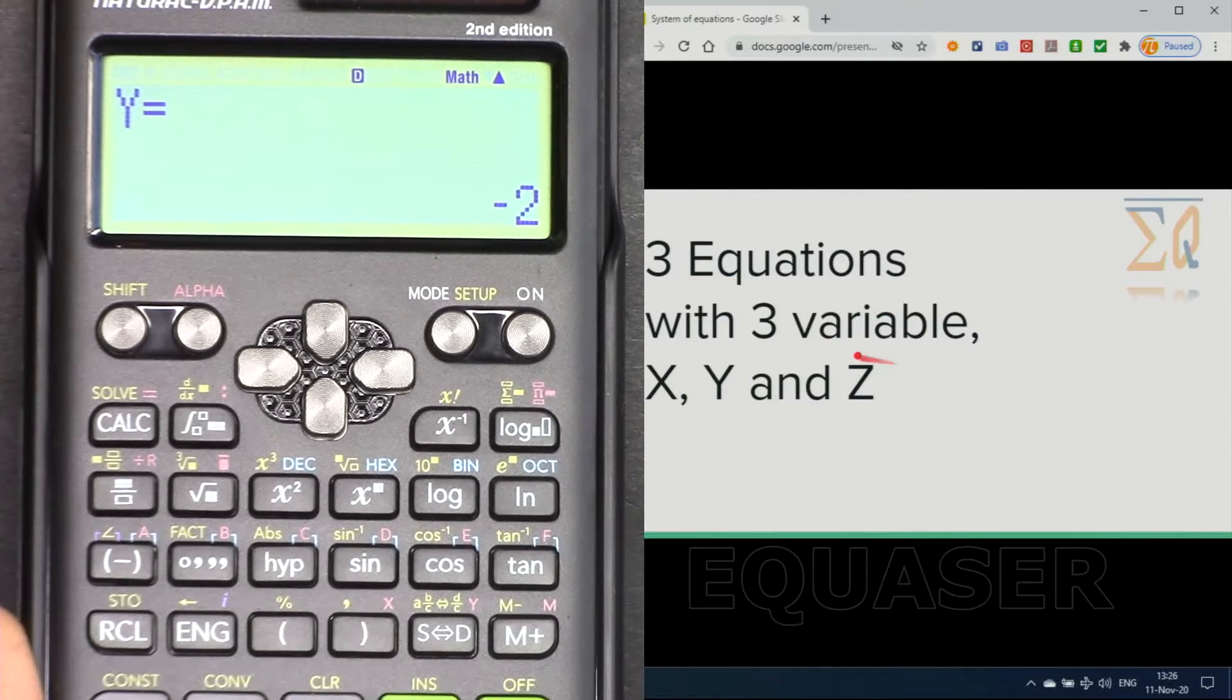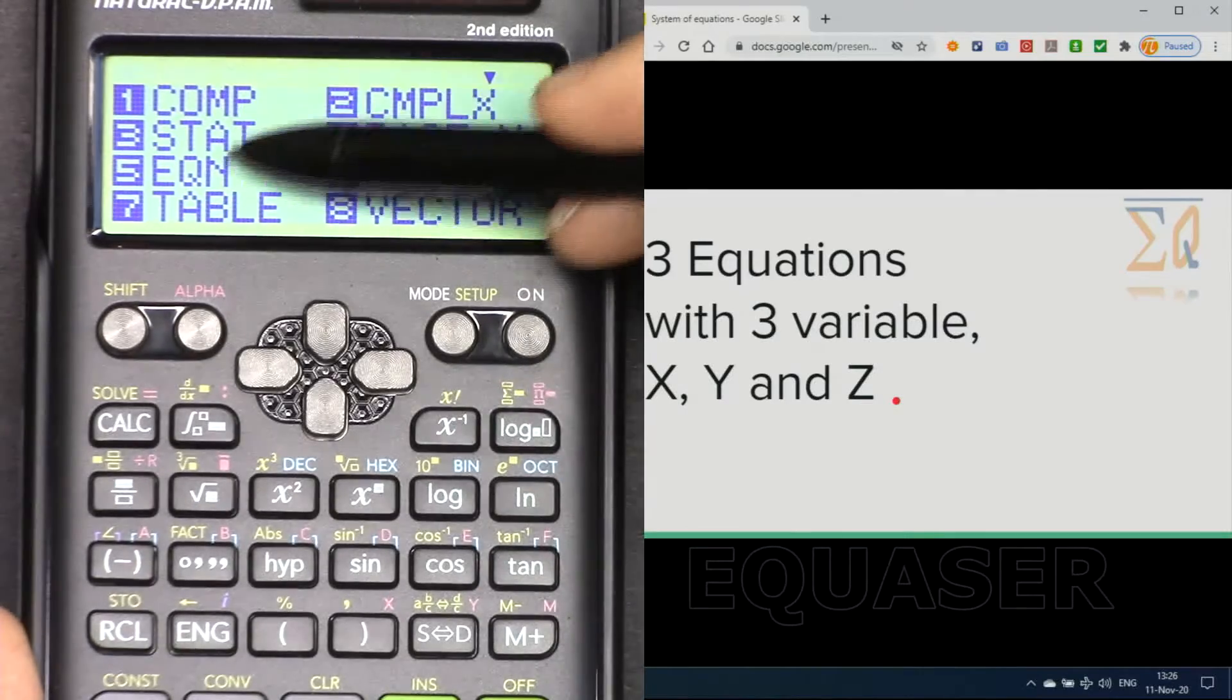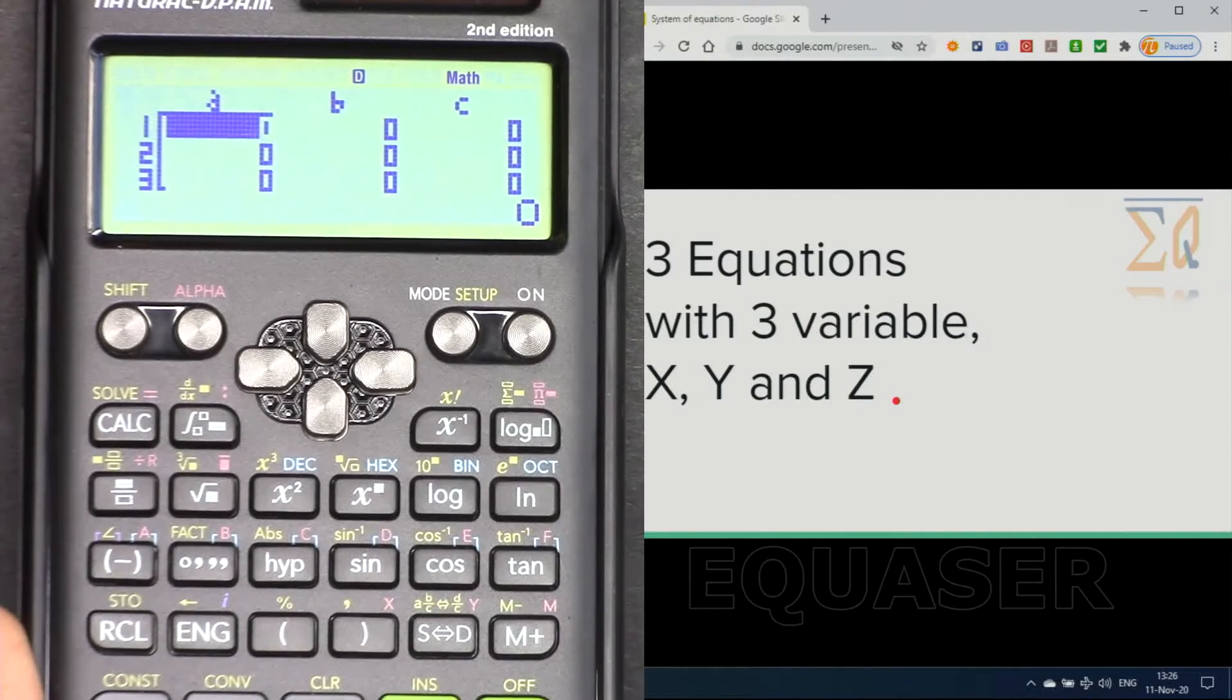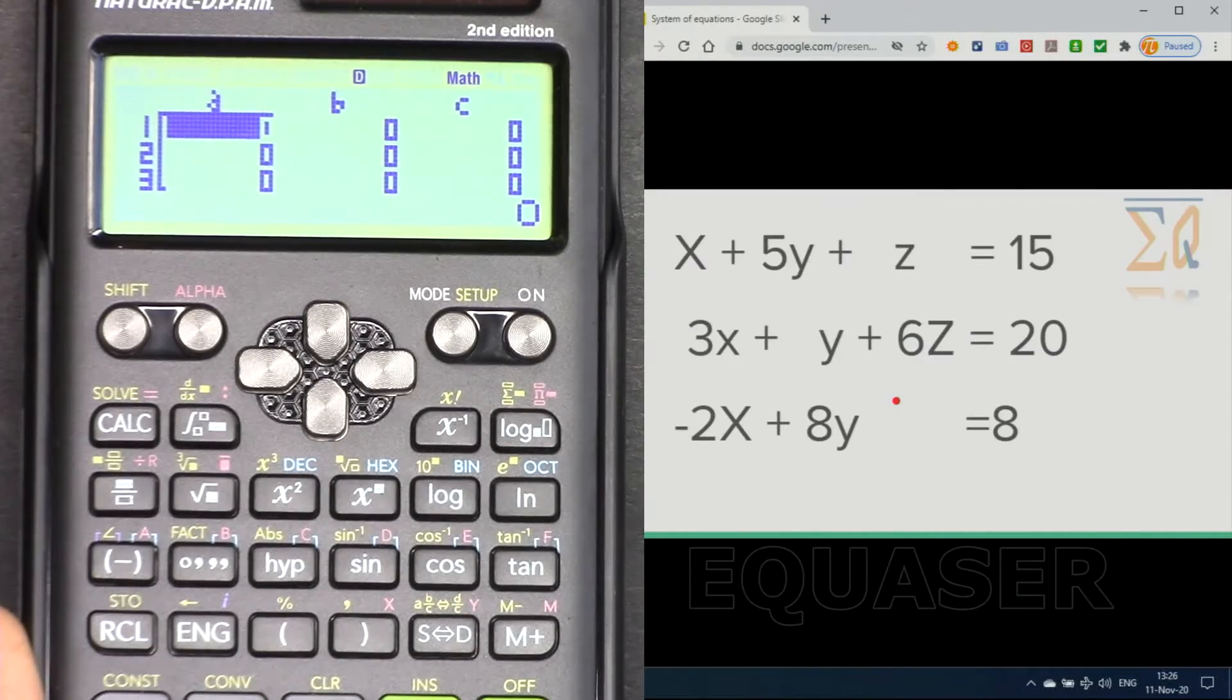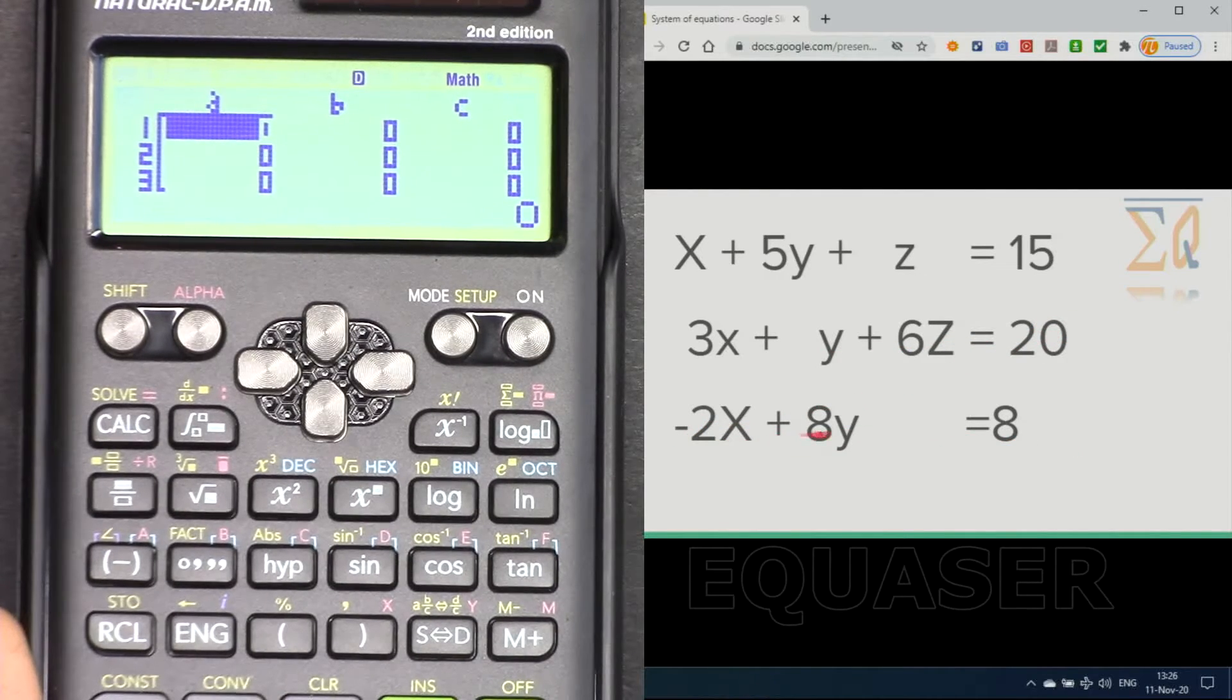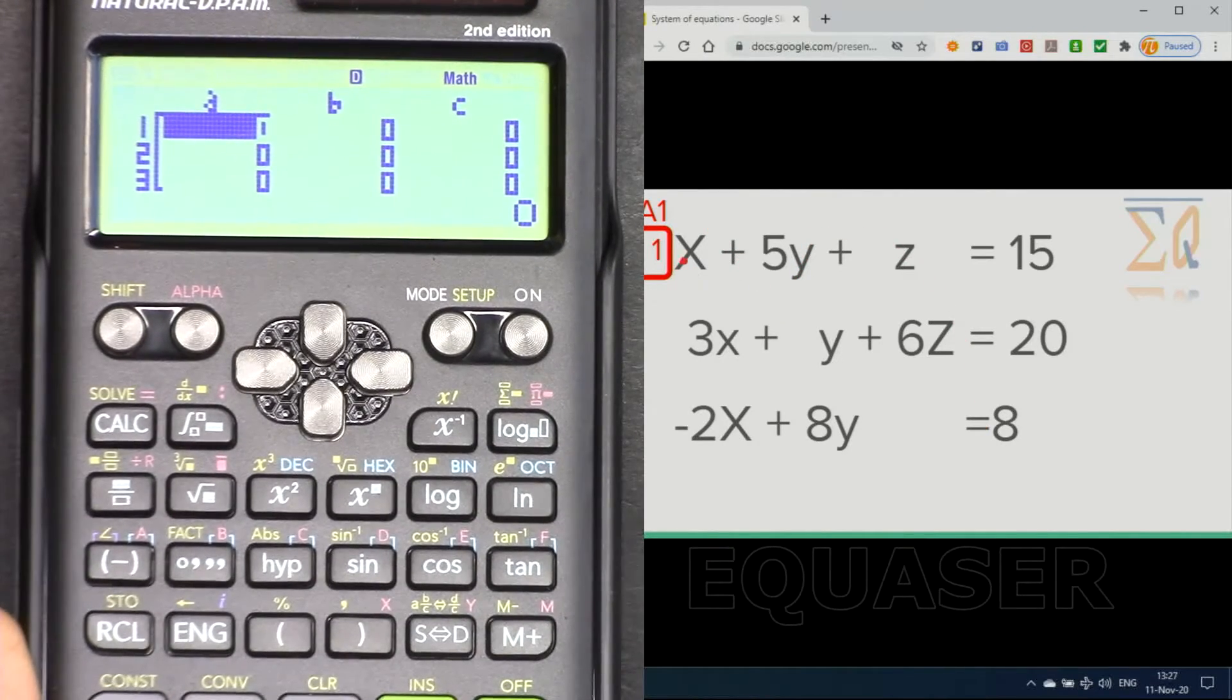Now let's see how we can do three equations. To solve three equations we must have three variables x, y, and z. Press mode and go to equation number five, and this time press two because we have x, y, and z. Now we have been presented the same as before but we have extra line for equation. Here we have this equation: x plus 5y plus z equals 15, and 3x plus y plus 6z equals 20, and in this one minus 2x plus 8y equals 8.